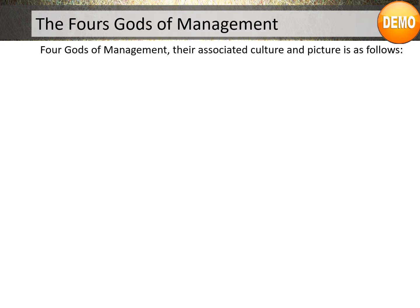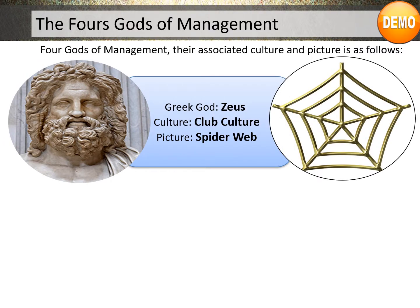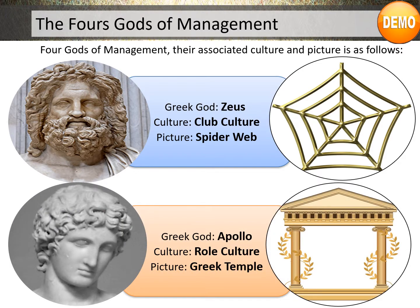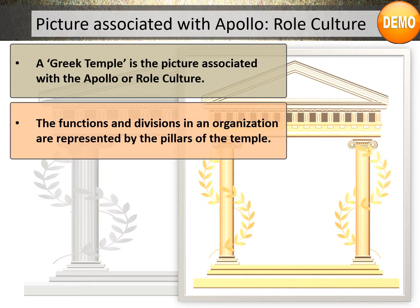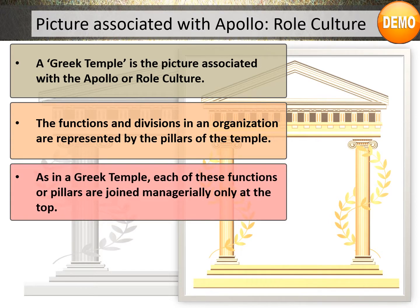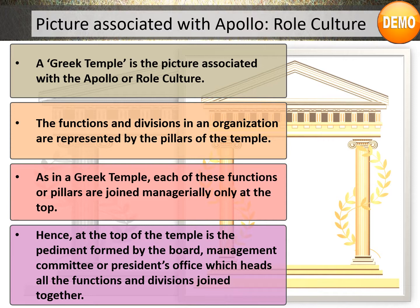For the Gods of Management, their associated culture and picture is as follows. A Greek temple is the picture associated with the Apollo or role culture. The functions and divisions in an organization are represented by the pillars of the temple. As in a Greek temple, each of these functions or pillars are joined managerially only at the top. At the top of the temple is the pediment formed by the board, management committee, or president's office, which heads all the functions and divisions joined together.